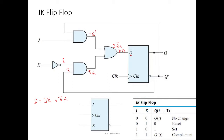The D flip-flop outputs at time T+1 whatever it accepted as input at time T. So we can write the characteristic equation of the JK flip-flop as Q(T+1) = J·Q̄ + K̄·Q. This is both the characteristic equation of the JK flip-flop and the input equation to the D flip-flop.